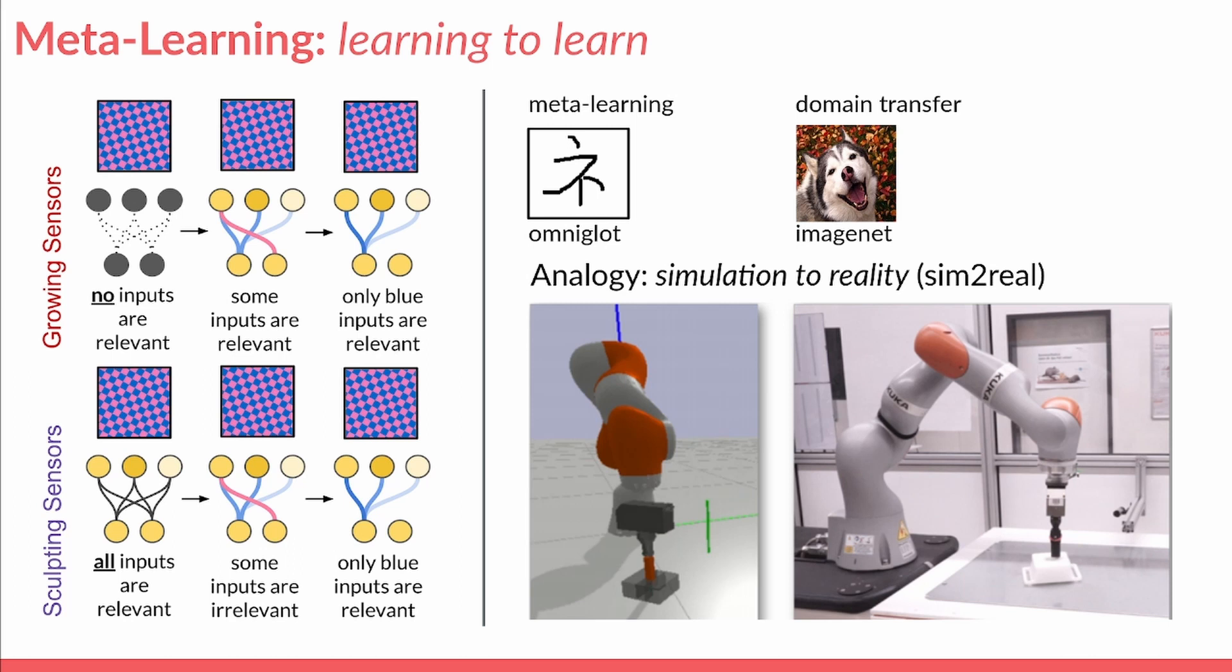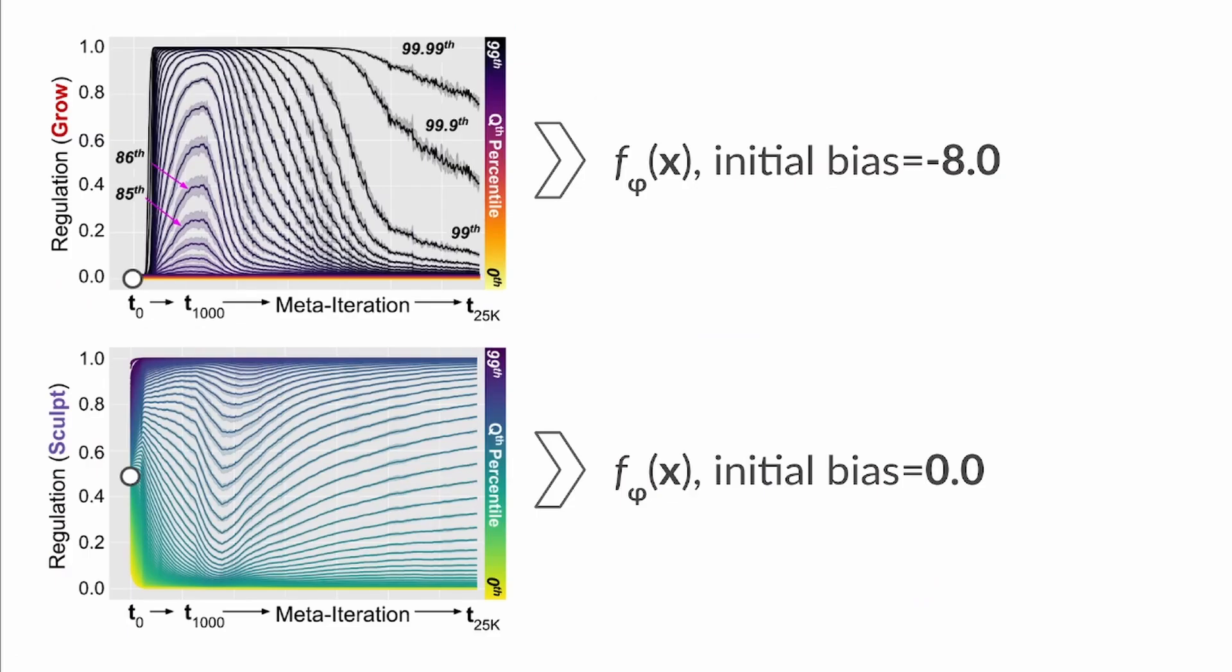After training our model with OML on the Omniglot image dataset, we then test for catastrophic forgetting under domain transfer to ImageNet. First, we see a qualitative difference in the output of our regulators during meta-learning.